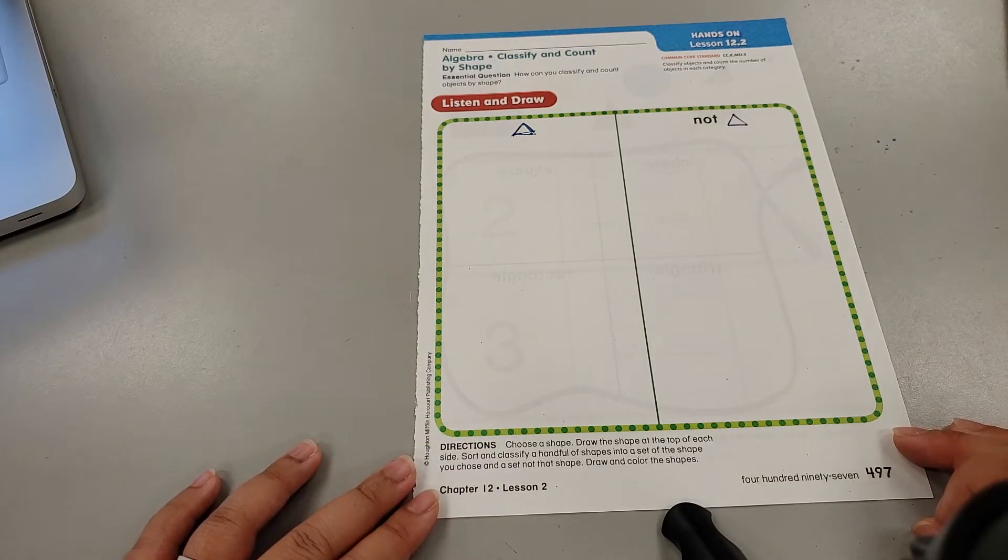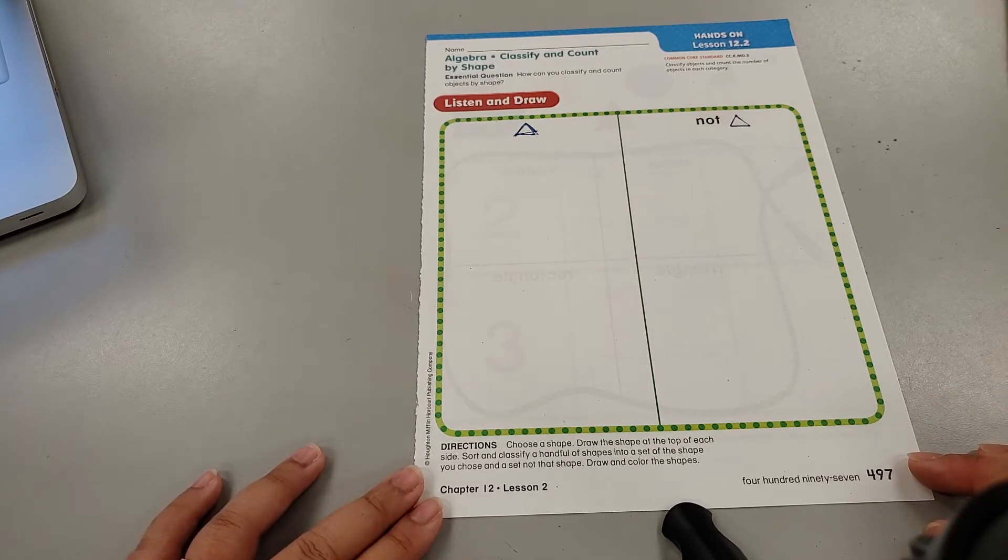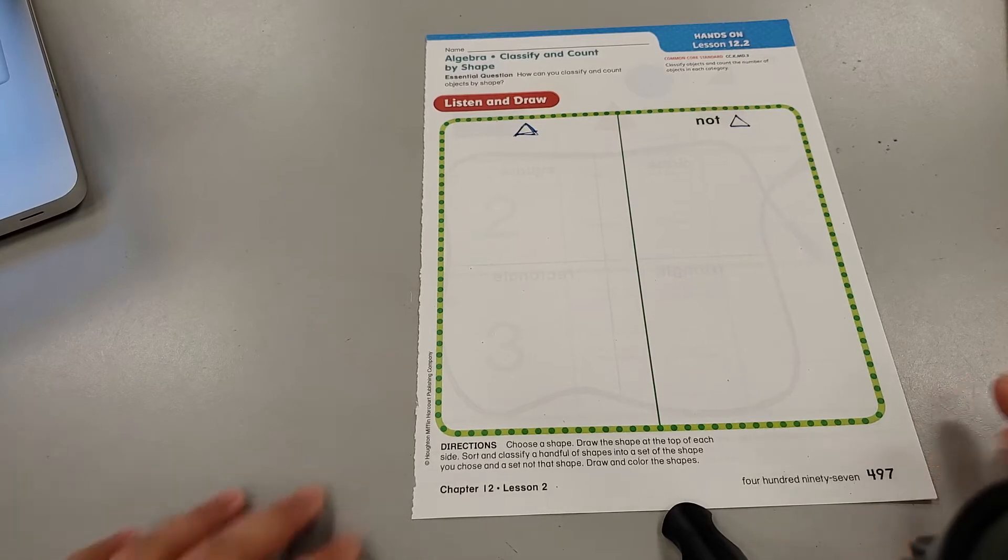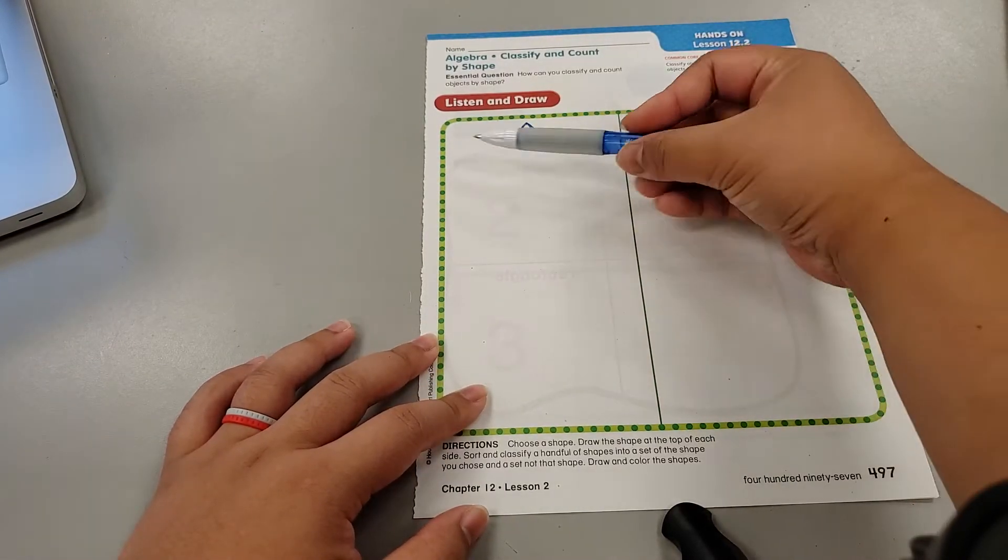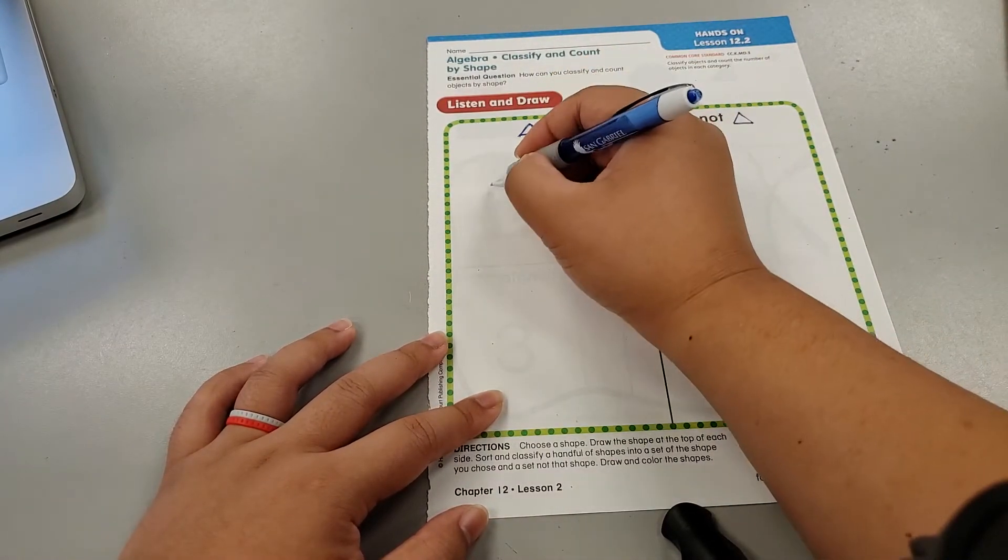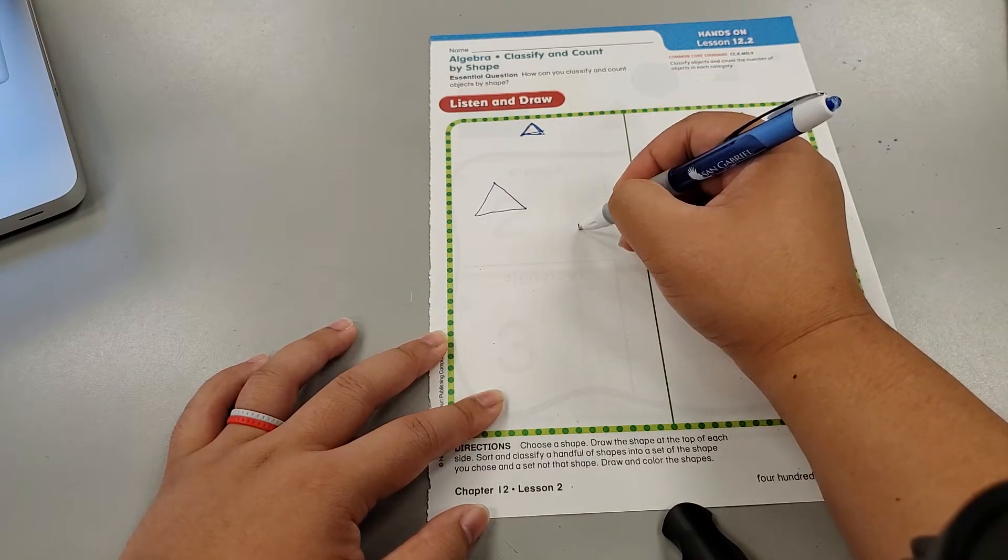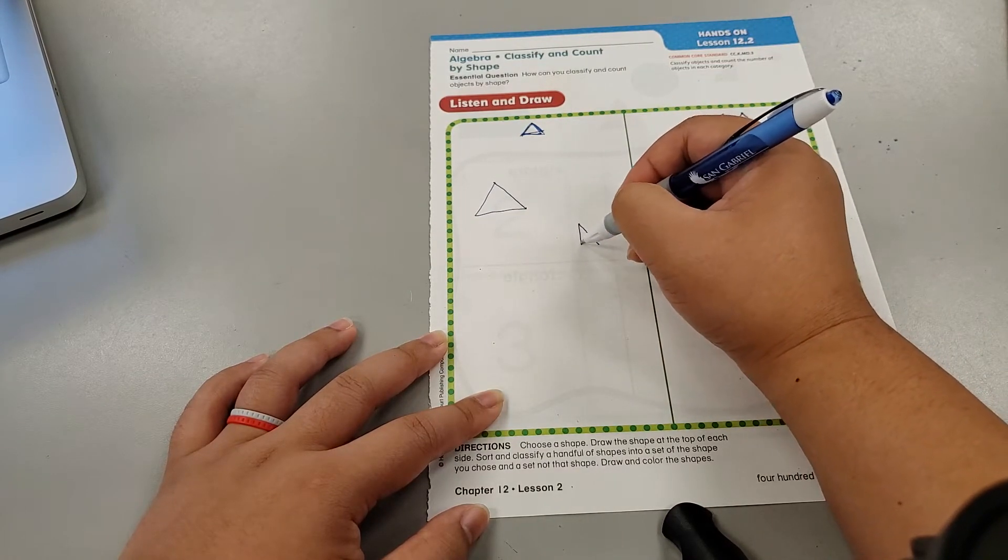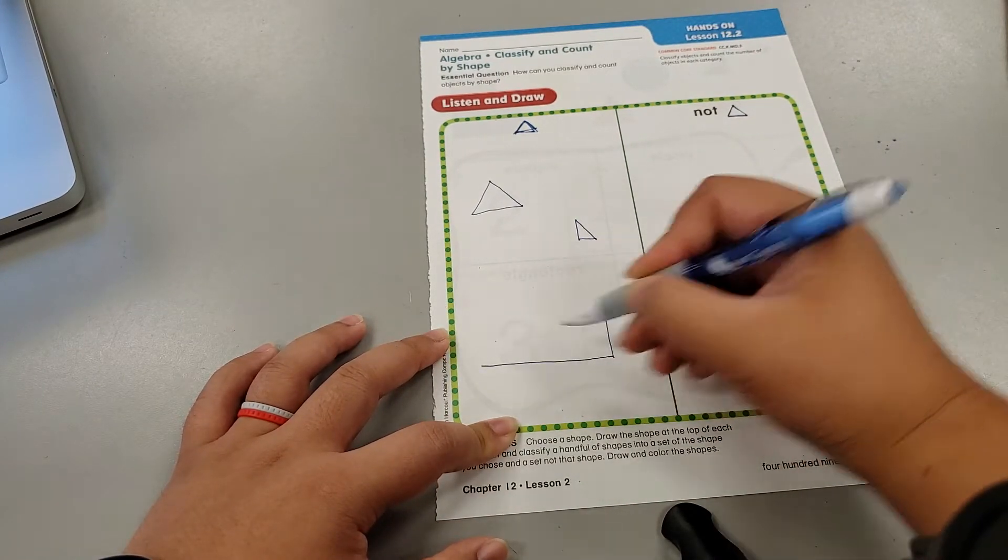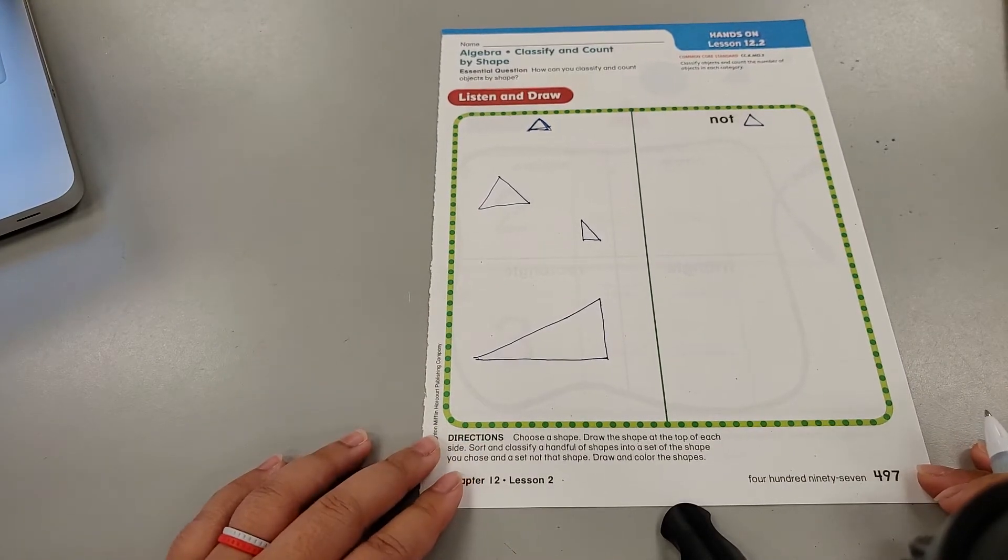Now, let's draw some shapes. The directions say sort and classify a handful of shapes. We can do three or four, however you'd like. So, on this side, only triangles can live on this side of my sorting mat. So I'll do maybe a big triangle here. Maybe a smaller triangle this way. Maybe a giant triangle this way. All the triangles can live in this space.